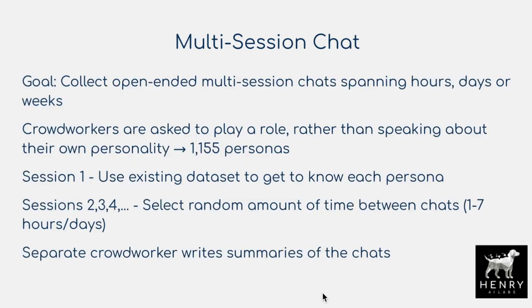The dataset they build is named Multi-Session Chat, and the collection procedure is pretty interesting. They use 1,155 crowd worker personas rather than their own personalities. First each worker learns about their own persona, then gets an existing dataset to learn about the other person's persona. Then in sessions two, three, and four, they select a random amount of time between chats — one to seven hours or one to seven days — before returning to chat.